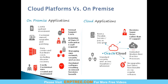In on-premise, patching and upgrades are done by the client team. In cloud, patches and upgrades are handled by the cloud support team. For example, if a client is on Fusion release 10 and wants to upgrade to release 11, they just inform Oracle, schedule the window, and Oracle completes it. Within cloud there are different options and some limitations we'll discuss.